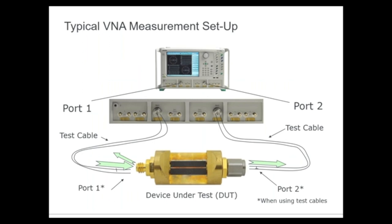In a typical two-port setup, we have a benchtop VNA with port one and port two, test cables attached, and a device under test — here a simple passive device. We're measuring transmission — a signal going from port one to port two — as well as a signal reflecting back at port one and similarly at port two. We measure all signals: transmitted forward and reverse, as well as reflected forward and reverse. In the denominator of our ratio measurement is always what we apply; the numerator is what we measure in reflected or transmitted sense.